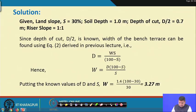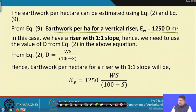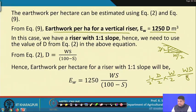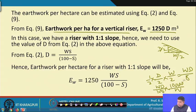For earthwork per hectare with a vertical riser, the formula is 1250·d. This is derived because the cross-sectional area of the triangle is (1/2)·(d/2)·(W/2) = Wd/8, multiplied by the terrace length per hectare which is 10,000/W. So Wd/8 × 10,000/W gives 1250d. For a 1 is to 1 slope riser, we replace W using W = d(100 − S)/S in this equation.